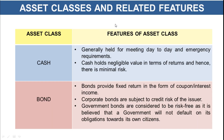Let's see asset classes and their related features. Cash is generally held for meeting day-to-day and emergency requirements. Cash holds negligible value in terms of returns and hence there is minimal risk. While holding cash to meet day-to-day expenses is fine, holding a larger amount of cash is bad because it gives no return and keeps your money stagnant. Money has its value when it comes to flow, so it's very important to keep your money flowing in some kind of activity.